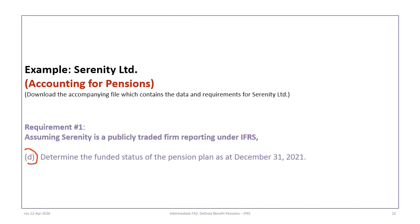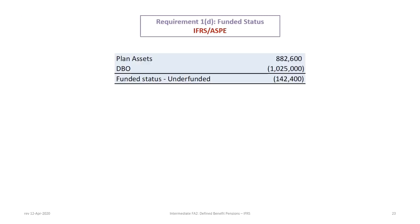The last requirement is to determine the funded status of the pension plan as at December 31st, 2021. This is pretty straightforward — we simply take the difference between the plan assets and the defined benefit obligation, which gives us $142,400. That also happens to be the same as the net defined benefit liability. It tells us that we are underfunded — whenever we have a liability, we are underfunded, in this case to the tune of $142,400. Our DBO exceeds our plan assets, which means the company doesn't have enough assets currently to satisfy the total obligation.